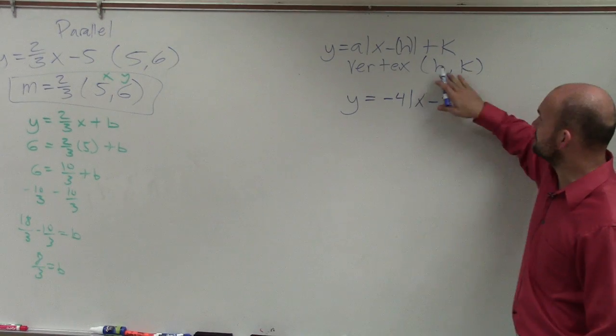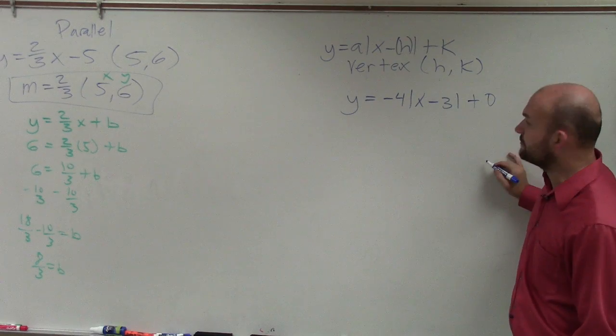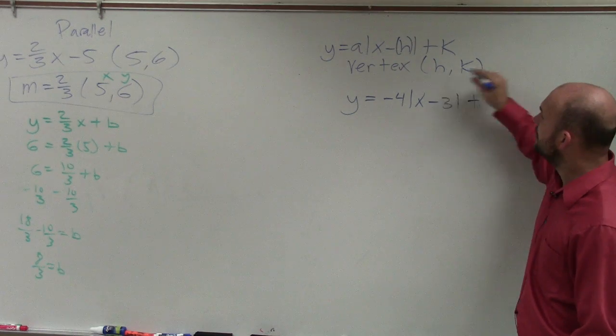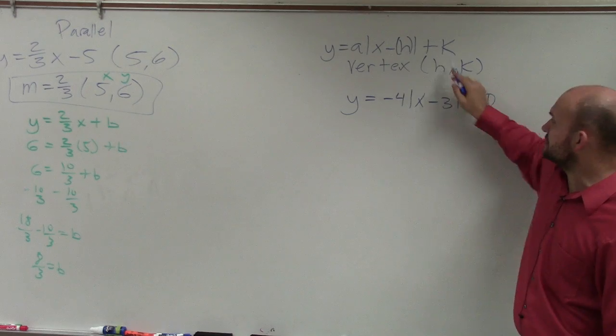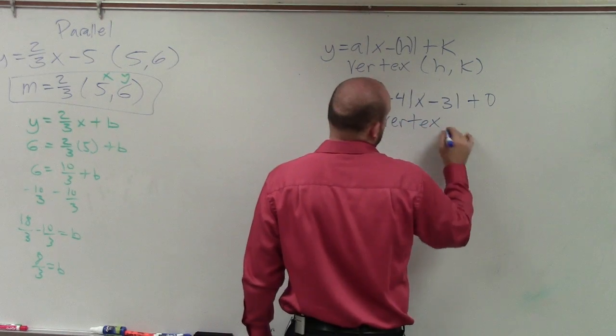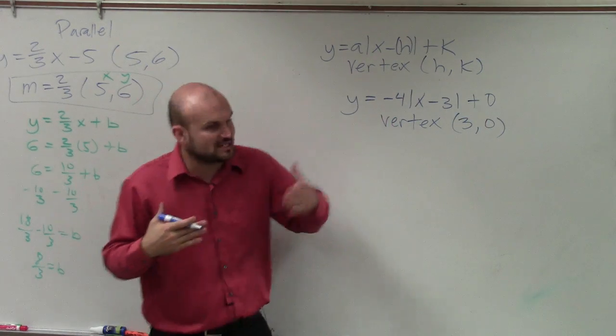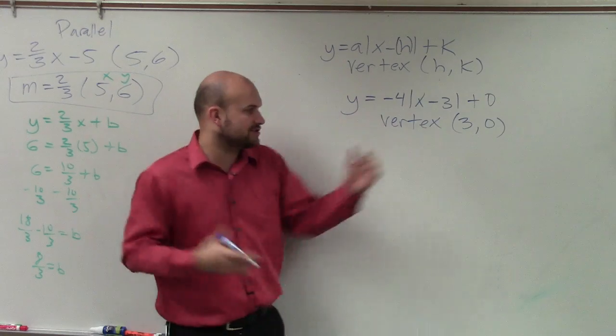So in this case, remember, vertex takes the form of h, k. Well, I'm not adding or subtracting anything outside of my function, so my k value would be 0. But now it's x minus h, so the value of h is going to be 3. So my vertex is 3 comma 0, meaning my graph has been horizontally shifted three units to the right.